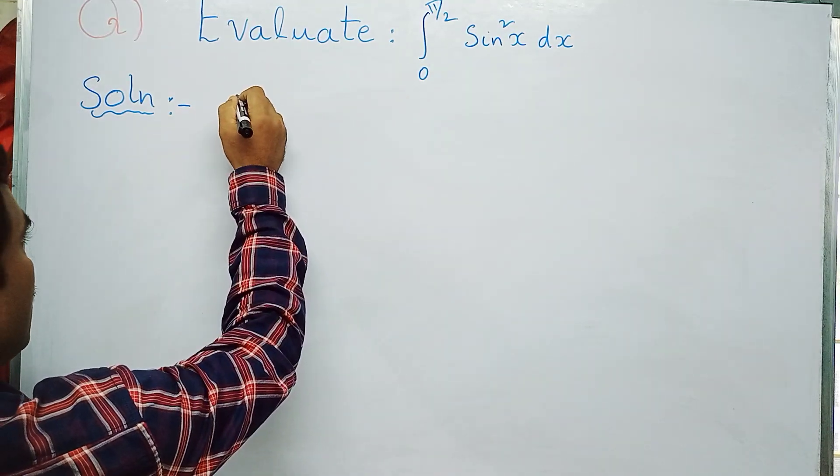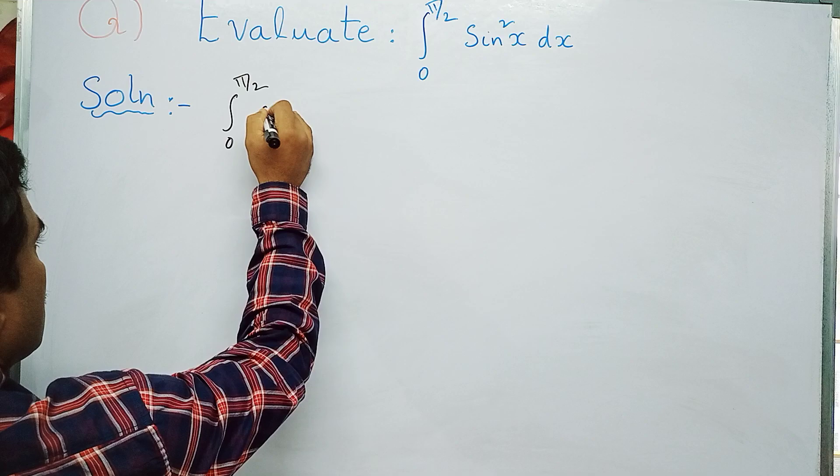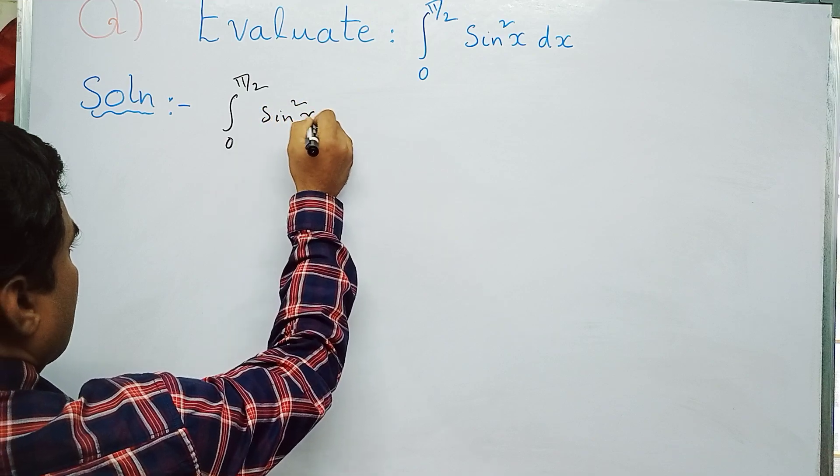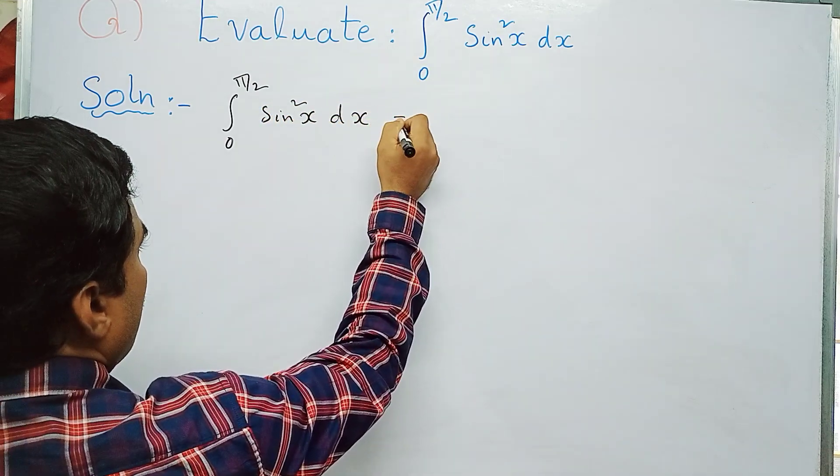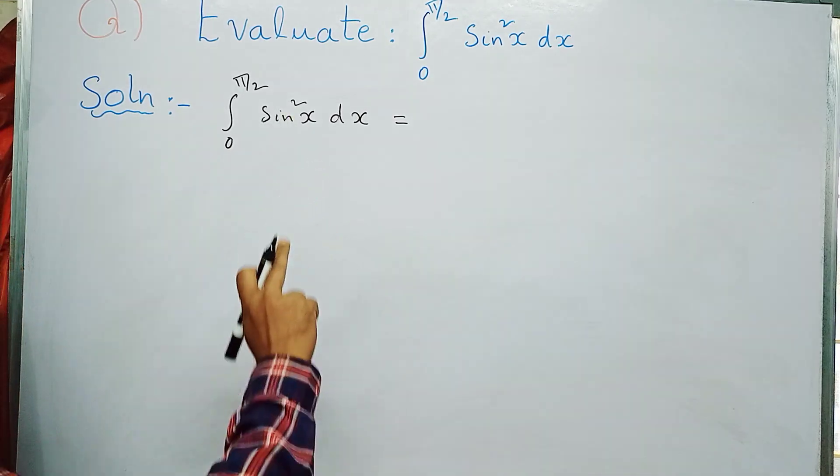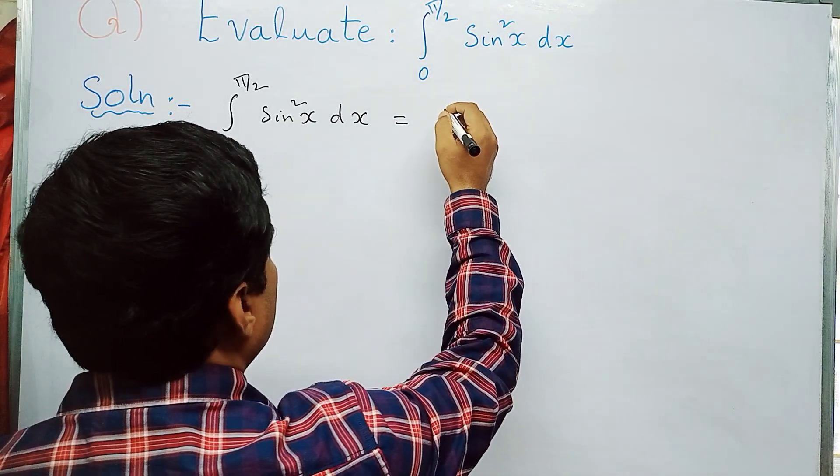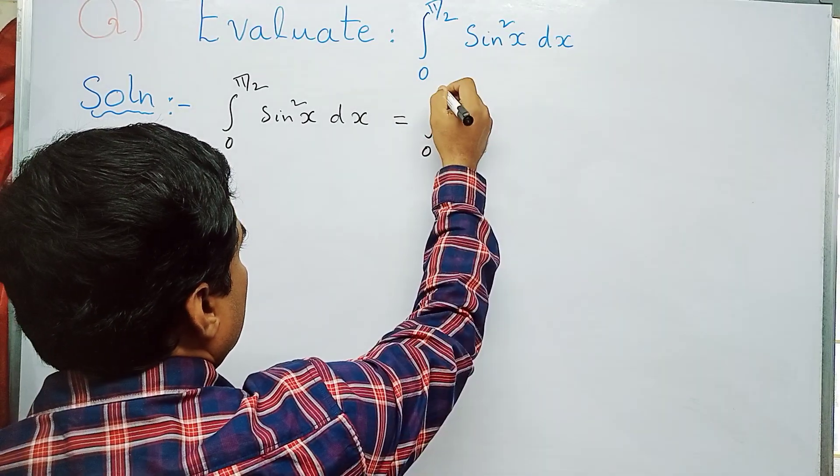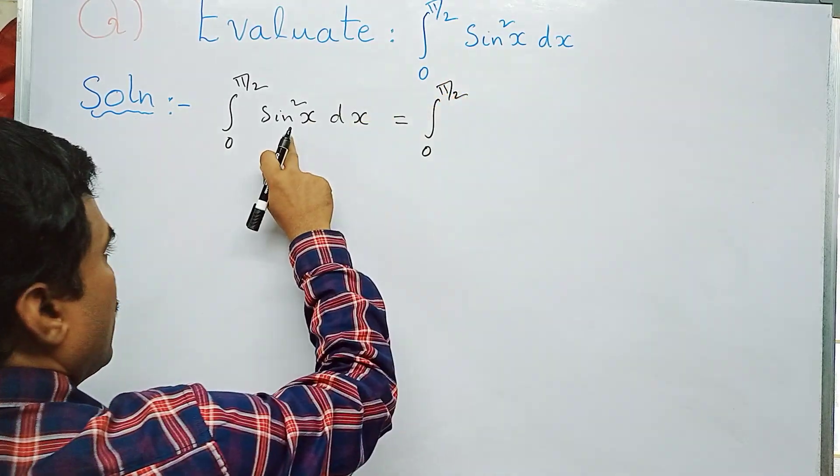Step 1: Integral from 0 to π/2 of sin²x dx. As I mentioned, first use the trigonometric formula for sin²x. Sin²x can be written as (1 - cos2x)/2. So we have: integral from 0 to π/2 of (1 - cos2x)/2 dx.